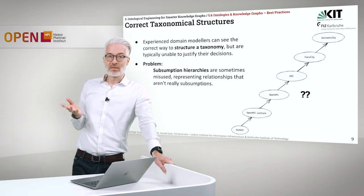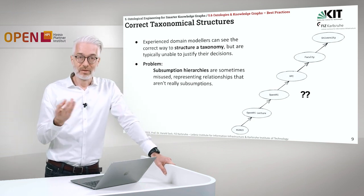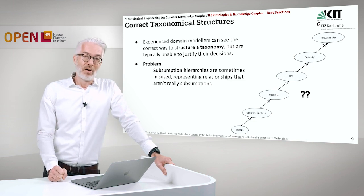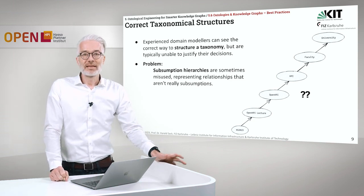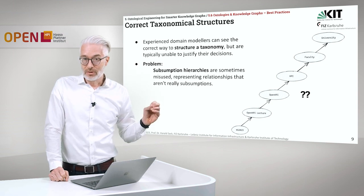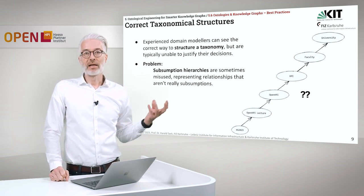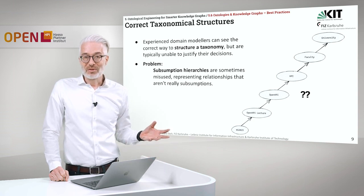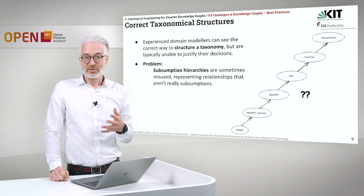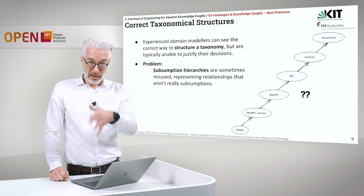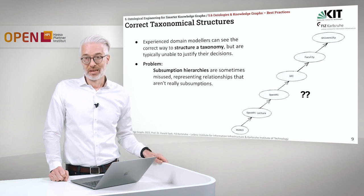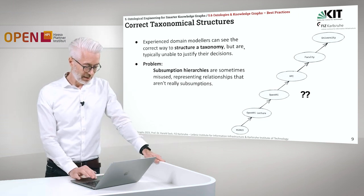Another common mistake is, of course, incorrect taxonomical structures. Often experienced domain modelers can see the correct way to structure a taxonomy, but they are typically unable to justify their decisions. One of the problems is that subclass hierarchies are sometimes misused, representing relationships that aren't really subsumptions.